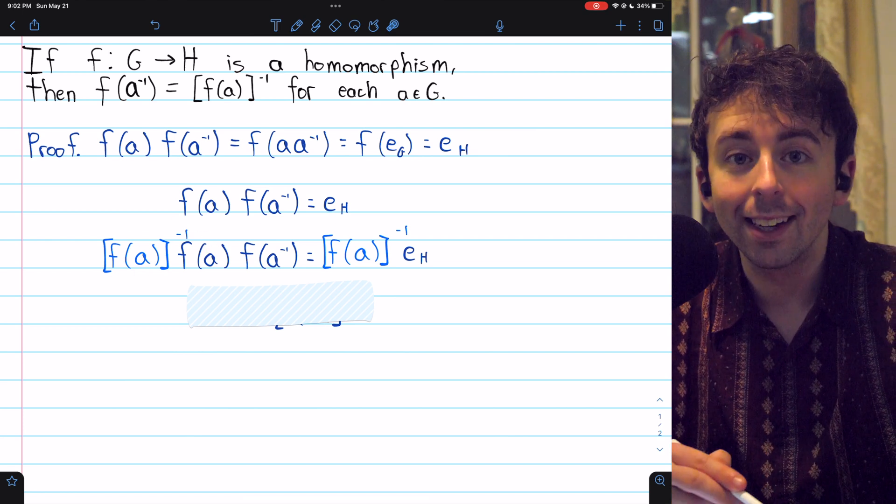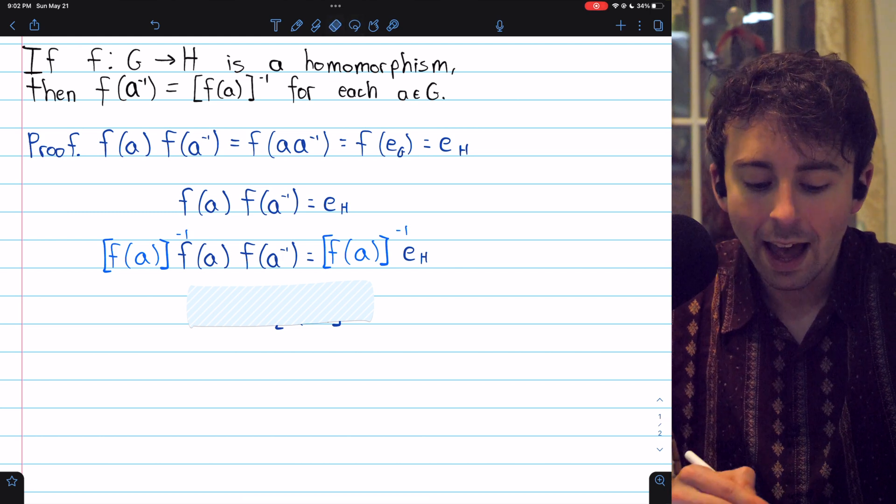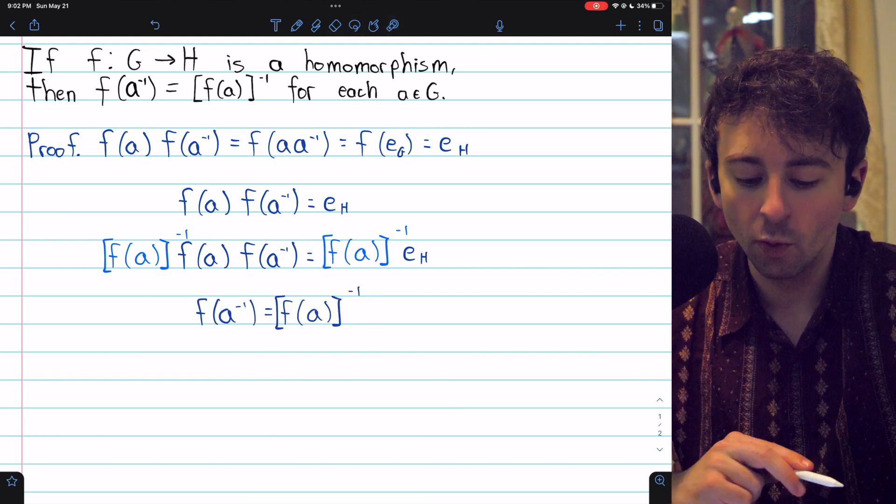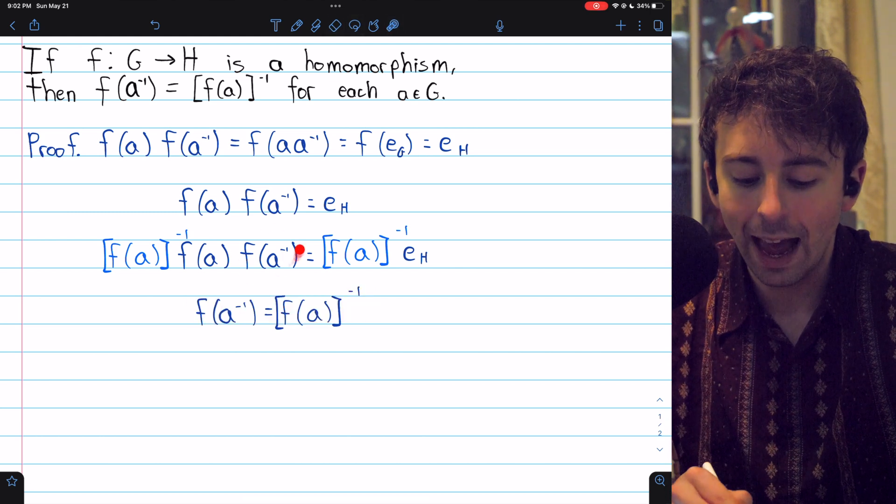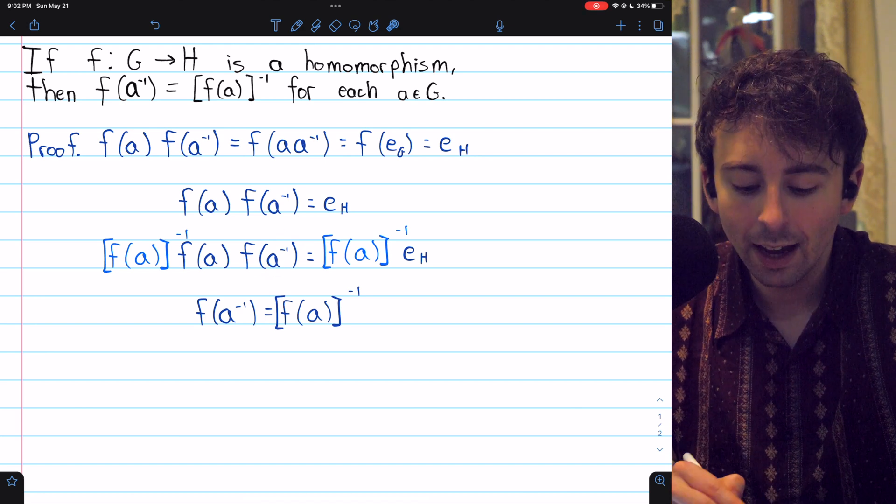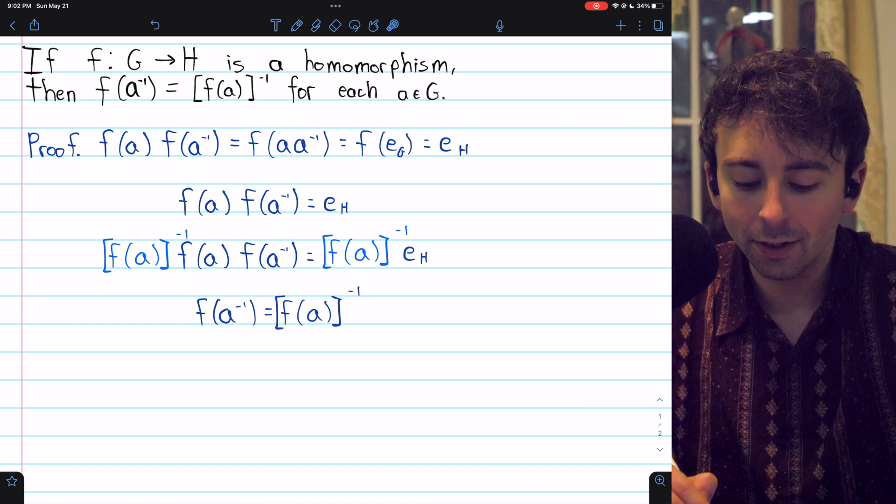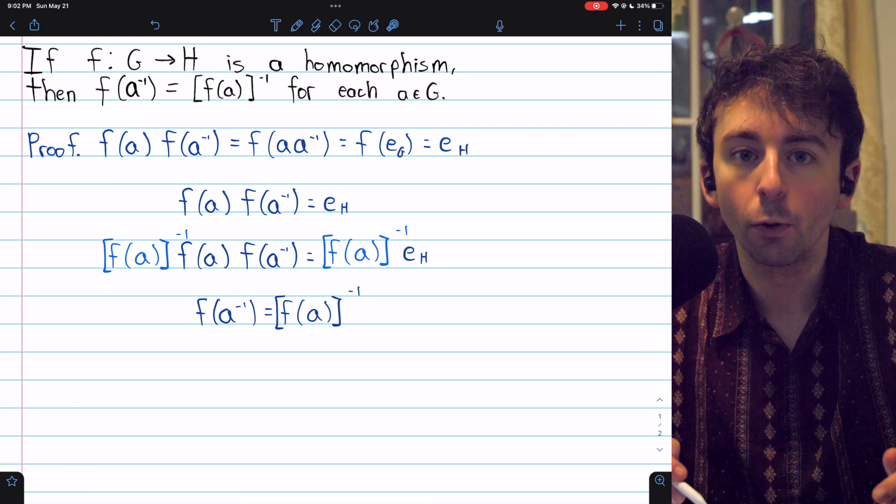Those can bind to the identity, so that can pretty much just go away, and we are left with the equation we desire. f(a inverse) on the left equals the inverse of f(a) on the right.